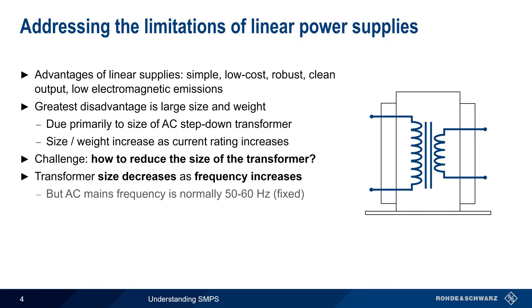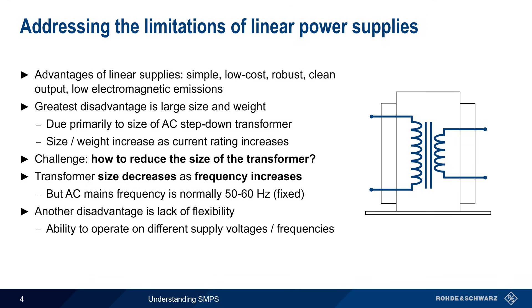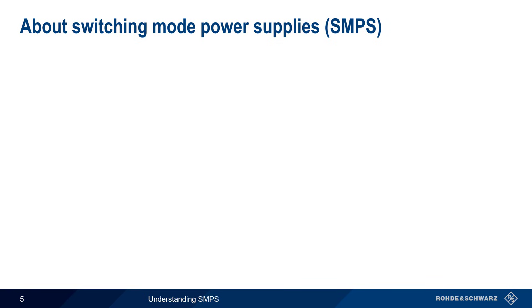But AC mains voltage is normally fixed at a relatively low frequency of 50 or 60 Hz. Another disadvantage of linear power supplies is their lack of flexibility — both the ability to operate on different supply voltages and frequencies, as well as the ability to produce different output voltages. Switching mode power supplies, also called switch mode or switched mode, are the most common solution to these issues.